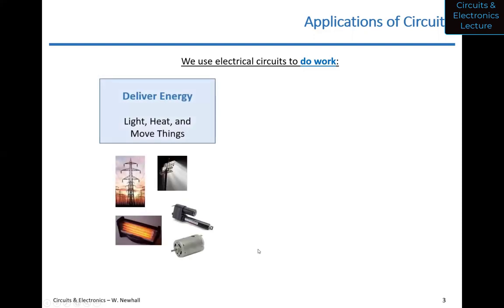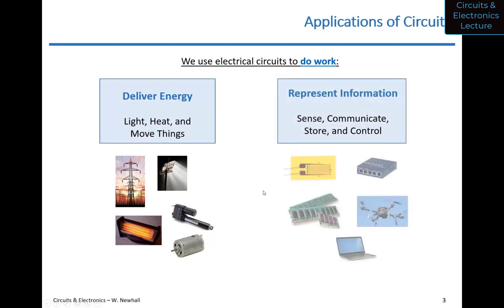Why do we use circuits? We use electrical circuits to do work. Doing work means delivering energy — lighting something, heating something, moving something. Something less obvious: representing information also requires doing work. To sense anything, control anything, or store anything in memory takes energy, power, voltage, and current. Electrical circuits are doing work in both cases.